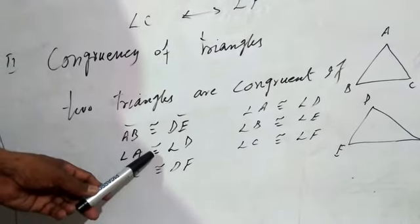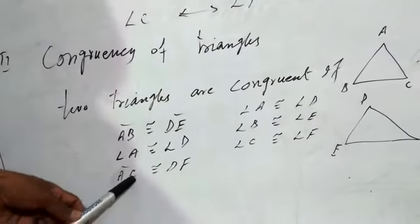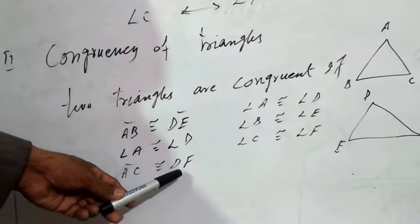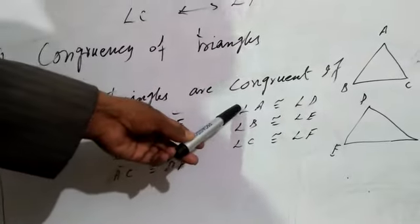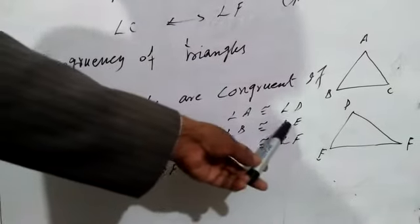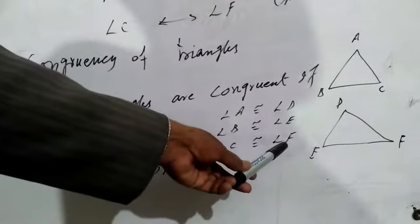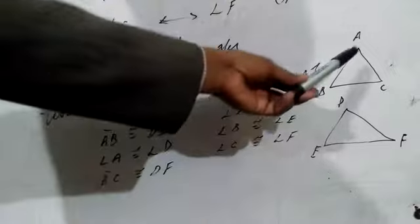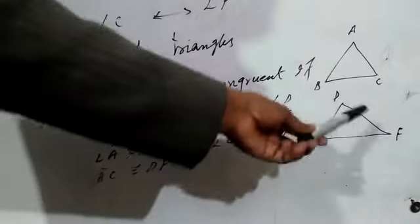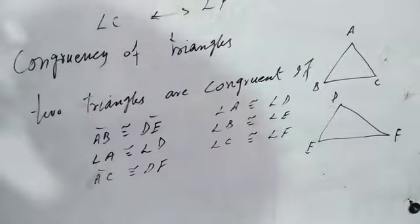Side AC is congruent to side DF, angle A is congruent to angle D, angle B is congruent to angle E, and angle C is congruent to angle F. Then these two triangles ABC and DEF will be congruent to each other.